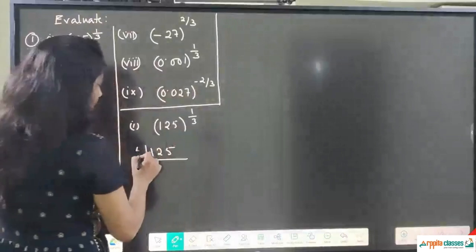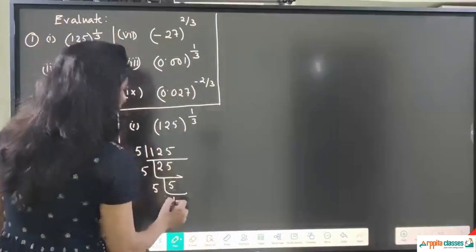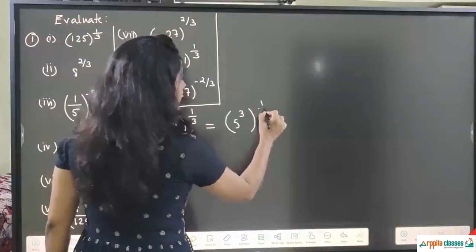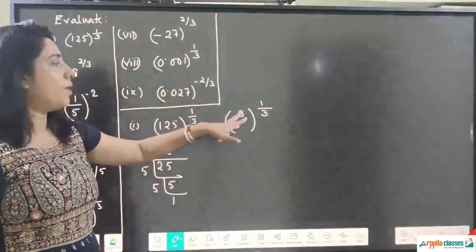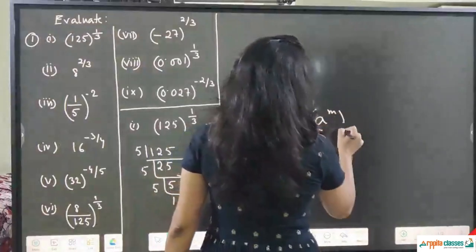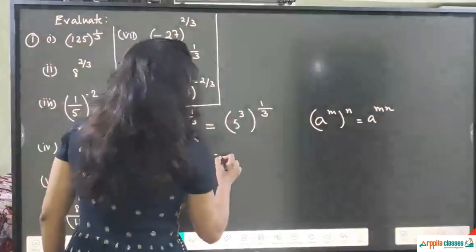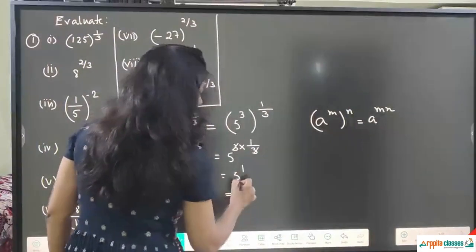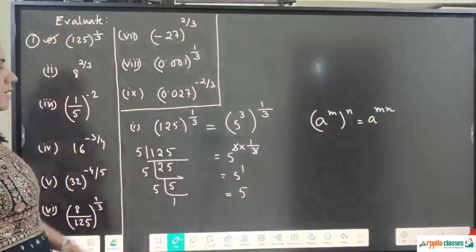The prime factors of 125 are 5 × 5 × 5, so 125 = 5³. We write (5³) to the power 1/3. Now using the property a to the power m, whole to the power n equals a to the power m × n, it becomes 5 to the power 3 × (1/3). The 3s cancel, giving 5 to the power 1, which is 5. So the answer to the first sub-question is 5.